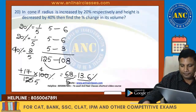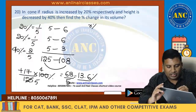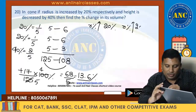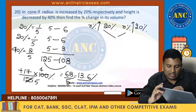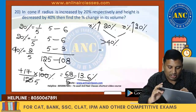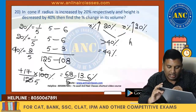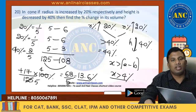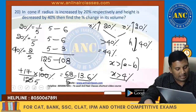Idea is clear, right? R percentage is 20, again R percentage is 20, so combined effect is greater than 40%. But height is decreased by 40%, so net change — using X greater than A minus B — the answer is greater than 4%. Keep an eye on the answer options. I hope the idea is clear.